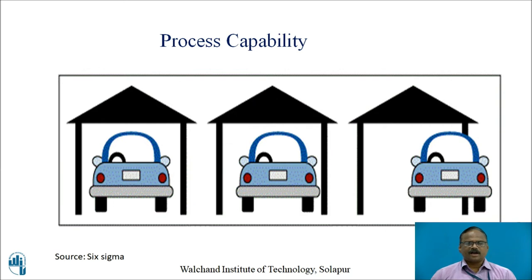Let us take an example of a car and a garage. If the garage size is more than the car size, we can drive the car in easily and park it. The garage represents the specification limit and the car represents the control limit. There are three situations: in the first, the center of the car is at the center of the garage; in the second, it is moving towards one side; in the third, there is friction with the wall of the garage, indicating the process is out of control.